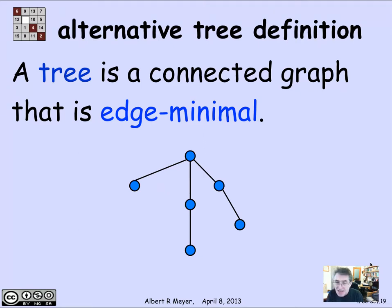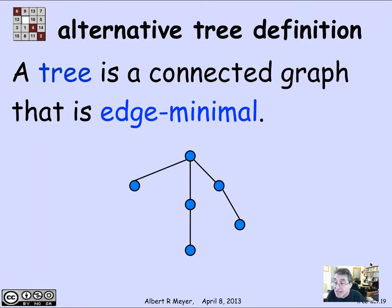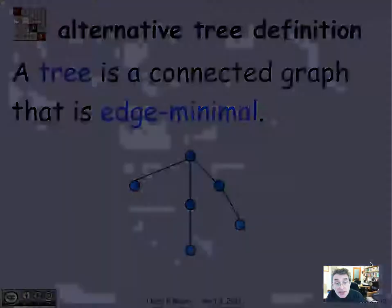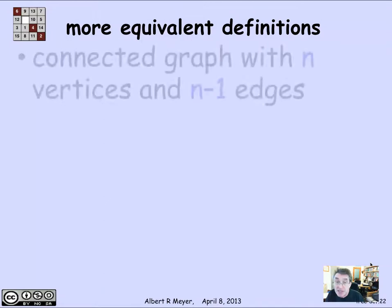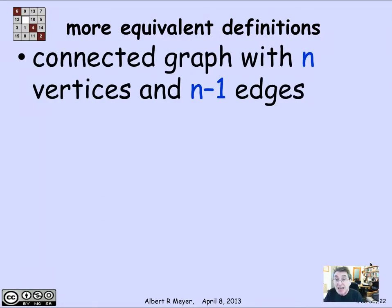If you think about different nodes in a network that need to communicate with each other and you want to know how many direct connections there have to be between these communication centers in order for everybody to talk to everybody else, the answer is it's got to be a tree on n vertices, and a tree on n vertices is going to have exactly n minus 1 edges. So that gives you still another equivalent definition: a tree is a connected graph that has n vertices and n minus 1 edges.